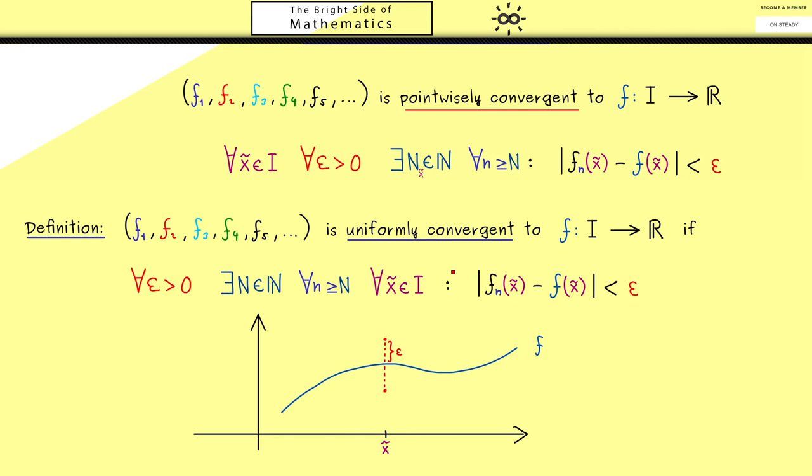However, we also know this inequality here should hold for all x tilde. Hence, we have to move this region here through all the points. In other words, what we get is such an epsilon tube around the graph of the function f. So the graph of the function f needs to lie inside this epsilon tube, and of course also the graphs of the functions in the sequence that come after this capital N. This is exactly what the uniform convergence tells us.